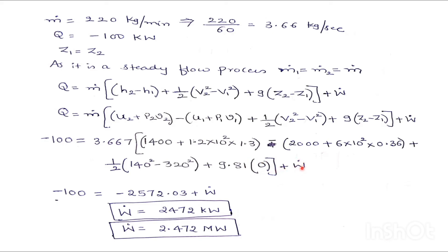So anyhow this will be 0 only plus W dot. So he has asked us to calculate the work done per unit time only. So if we solve this entire equation, this will be minus 2572.03 plus W dot. So therefore, W dot will be equals to 2472 kilowatt or 2.472 megawatt.